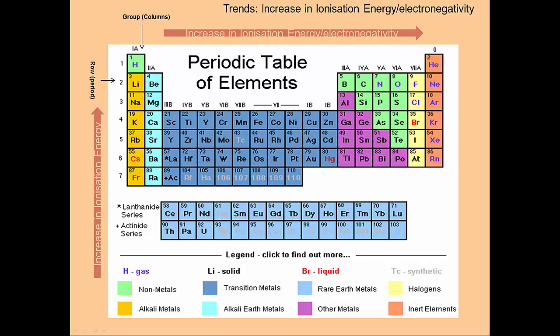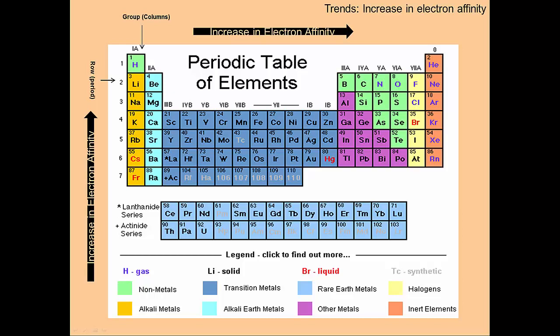Electronegativity is the ability of an atom to draw electrons to itself when taking part in a covalent bond. Fluorine has a very high electronegativity and will draw electrons close to itself, whereas francium has very low electronegativity. Noble gases are not considered to have any electronegativity as they're not reactive. Electron affinity follows the same trend — it is the ability to attract and gain an electron. Fluorine wants another electron to be like neon, whereas francium has a low electron affinity.